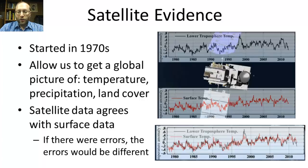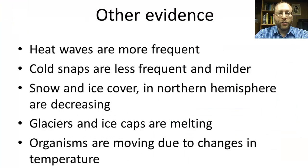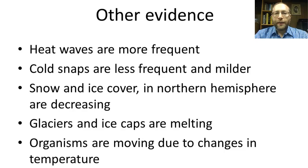Looking from 1979 to 2012, the temperature is clearly rising — global warming is occurring. There is other data too: heat waves are more frequent, cold snaps are less frequent and milder, snow and ice cover in the northern hemisphere are decreasing, and glaciers and ice caps are melting. This melting is very serious — and we'll get into more detail later. The seriousness is more in terms of causing global warming rather than just the consequence of rising sea levels. Also, organisms are moving due to changes in temperature.